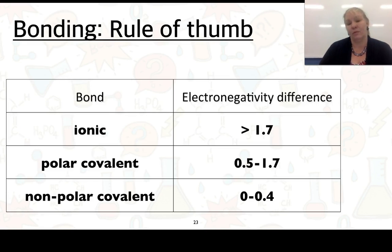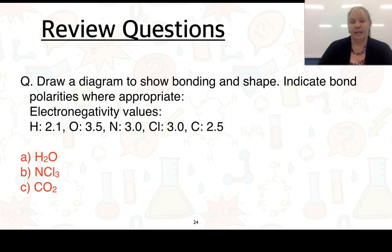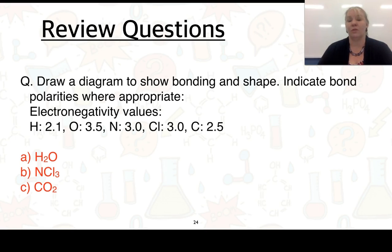Here's a rule of thumb for covalent bonding: an electronegativity difference between 0 and 0.4 is classed as a non-polar bond; between 0.5 and 1.7 is polar; and anything greater than 1.7 is ionic. We'll look at some examples to draw diagrams showing bonding and shape. If the bond is polar, we use partial positive and partial negative notation. The electronegativity values used here are for hydrogen, oxygen, nitrogen, chlorine, and carbon.